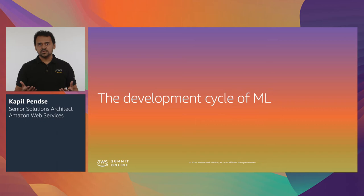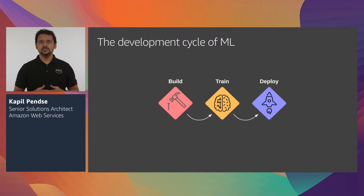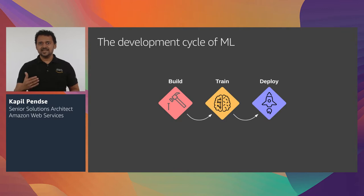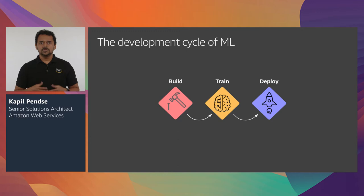Let's begin by establishing a good understanding of a typical ML development cycle. In its most simplified form, you start with the build phase in which you explore the data and develop your algorithm, and then you move into the train phase. During training, your algorithm processes the training data set to generate a model. Once you have a model that performs satisfactorily, the next phase is deployment, where you deploy your trained model into a production system. So it looks fairly straightforward — you build, you train, and then you deploy.